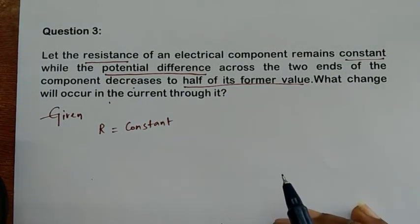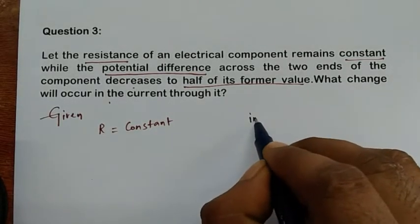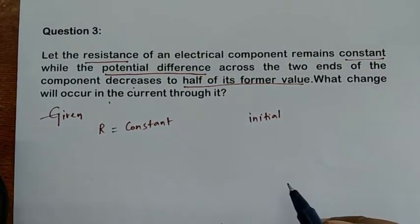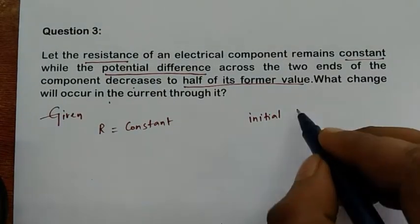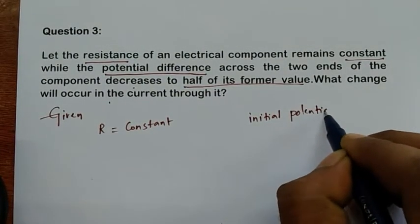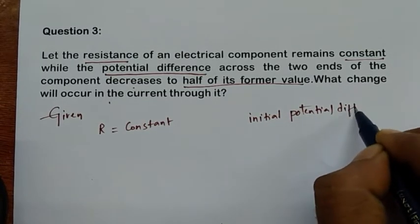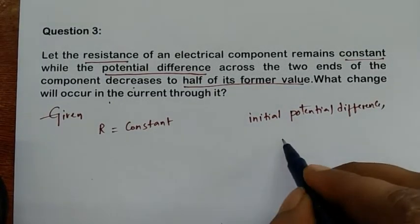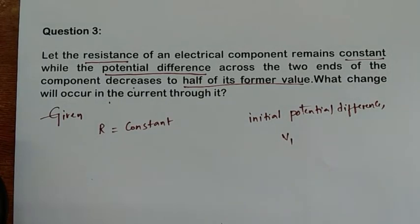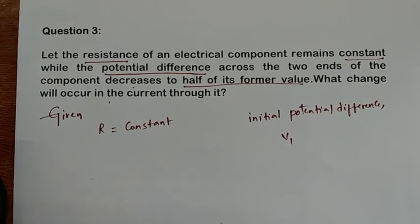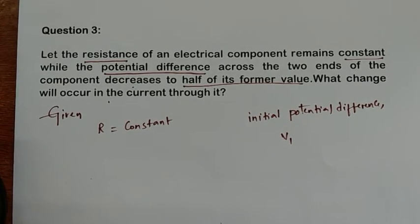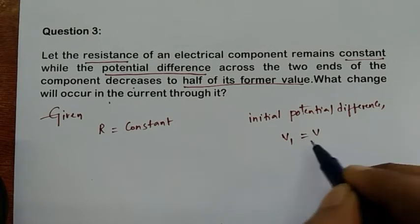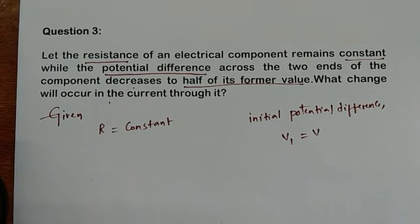Half of its former value means initially it has some value, and after that the value becomes half. So I am going to write the initial potential difference as V1. V1 is the initial potential difference, and we take V1 equal to V.